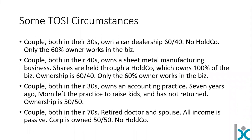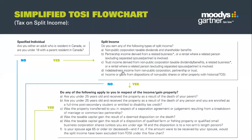We've got four different scenarios we're going to work through. We'll start off with our top one here — this couple, both in their 30s. Car dealership where it's incorporated — I should mention that — it's incorporated. 60-40 ownership. There's no holding company in place. Only the 60% owner works in the business. We're wondering whether the tax on split income rules would apply to the 40% owner. We're going to pop over to the chart and see if we can follow it to get an answer.